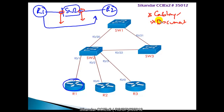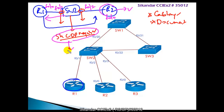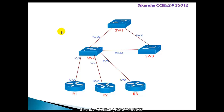Documentation may not always be accurate because configurations change over time. Instead, you can go to the switch and issue 'show CDP neighbor'. This displays neighbor information - the port used on the local side, the port used on the router side such as f0/0, and the IP address - making troubleshooting much easier.